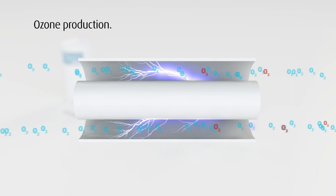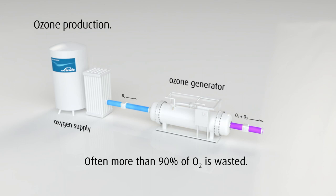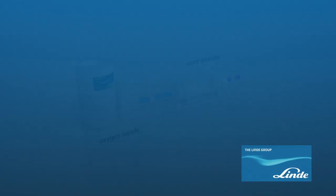The remaining unconverted oxygen is ultimately vented. Often, more than 90% of the oxygen goes to waste, resulting in unnecessarily high operating expenses.